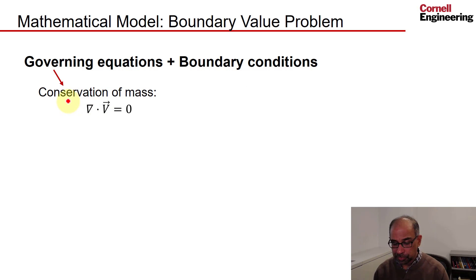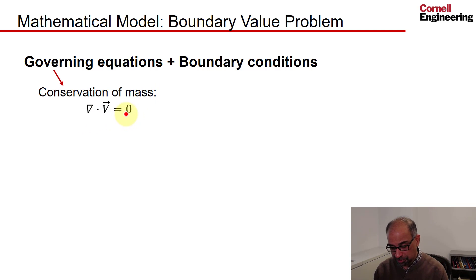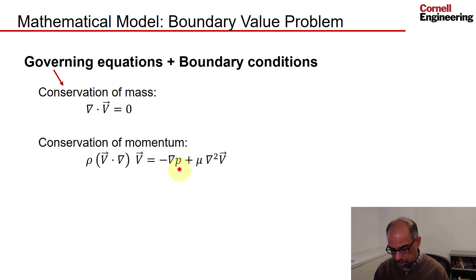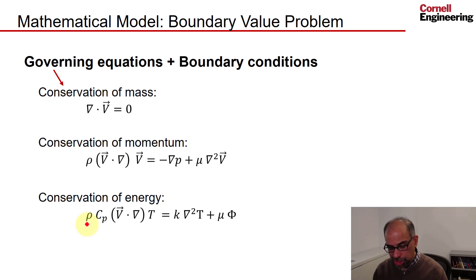The governing equations are based on the conservation laws. Conservation of mass applied to a vanishingly small chunk of fluid gives us del dot v equal to zero, assuming constant density. Then conservation of momentum applied to a vanishingly small chunk of fluid — this is F equal to ma — where the forces on the right-hand side are the net pressure force and the net viscous force, all written per unit volume, and this term is the acceleration.